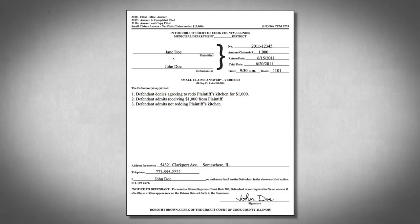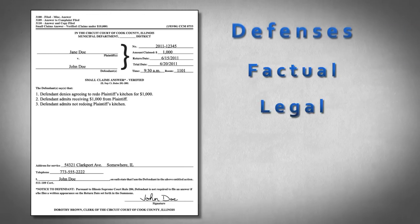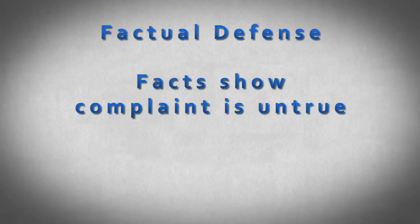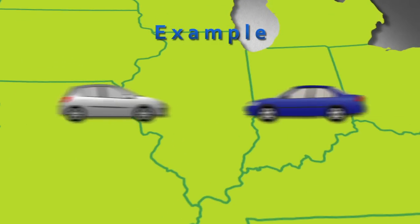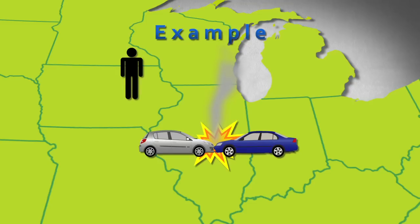In your answer, you may also have to give your defenses to the complaint. Defenses can be factual or legal. A factual defense is where you argue the facts show that the complaint is untrue. For example, if the complaint says you hit someone with your car in Illinois, but you were out of the state at the time of the accident, that is a factual defense.